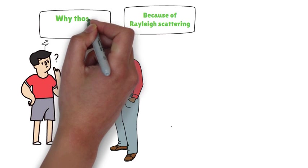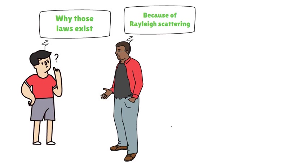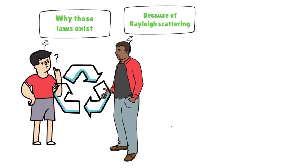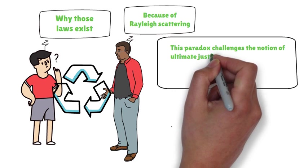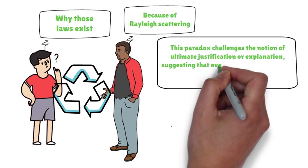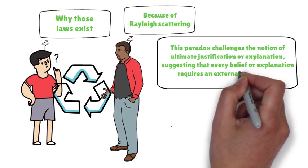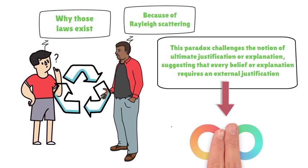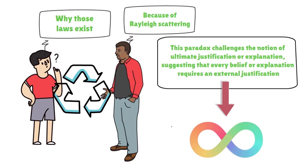Yet the child could persist, asking why those laws exist, and so on. Each answer relies on a deeper explanation, creating an infinite chain. This paradox challenges the notion of ultimate justification or explanation, suggesting that every belief or explanation requires an external justification, leading to an endless loop. It prompts deep reflection on the nature of knowledge and the limits of human understanding.